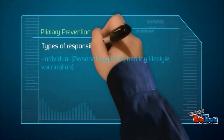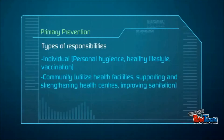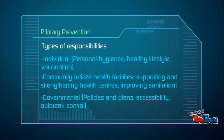In primary prevention, there are different responsibilities that need to be implemented. On an individual basis, this includes personal hygiene, healthy lifestyle, vaccination, and preventing disease. At the community level, this includes utilizing health facilities, supporting and strengthening health centers, and improving sanitation and food safety. The governmental level encompasses policies and plans, resources, accessibility, and outbreak control.